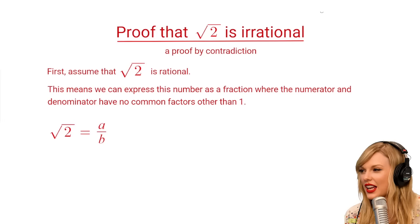So, let's say that the square root of 2 is equal to A divided by B, where A and B are integers with no common factors other than 1.